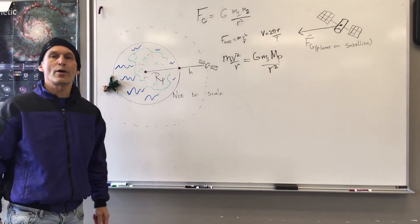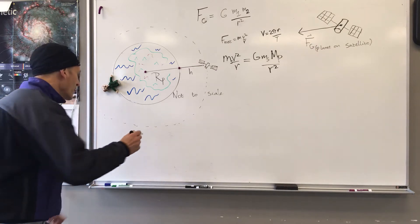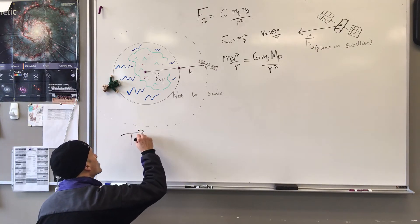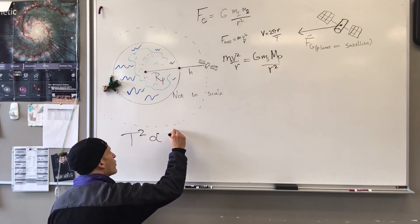Hello, students. I'm going to show you how to derive Kepler's third law from Newton's laws. Kepler's third law says that the period of an orbit squared is proportional to the radius of the orbit cubed.